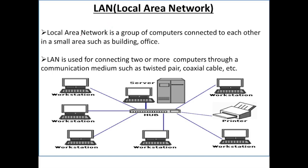First we have Local Area Network. Local Area Network is a group of computers connected to each other in small areas such as a building or office. LAN is used for connecting two or more computers through a communication medium such as twisted pair or coaxial cable.